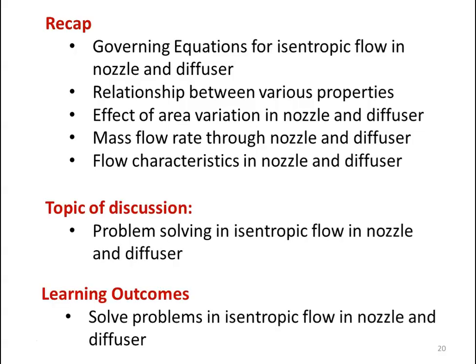In the earlier lecture, we discussed the governing equation for isentropic flow in nozzle and diffuser, relationship between various properties in the isentropic flow, effect of area variation in the nozzle and the diffuser, mass flow rate through the nozzle and diffuser, flow characteristics in the nozzle and diffuser. These are all the topics we have discussed earlier and we solved few problems from the question paper in the isentropic flow. In this lecture also, we continue with the problem solving.